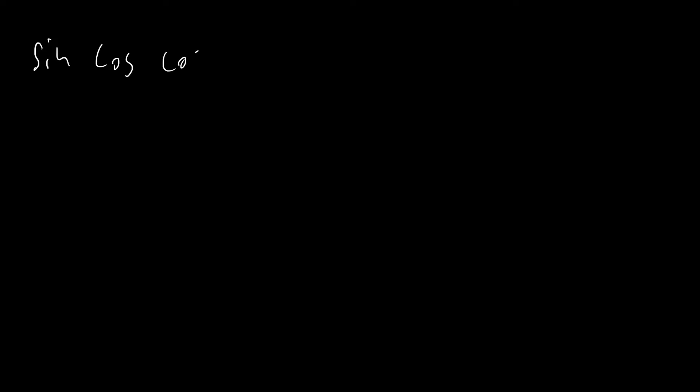The first thing we need to discuss is that we're going to use a lot of different identities in this video, and I'm not going to go over the proof of all of them because that would take forever. They're relatively easy to prove just using the definition of sine, cosine, cosh, and sinh. So we're just going to use the sine, cosine, cosh, and sinh identities for a plus b.